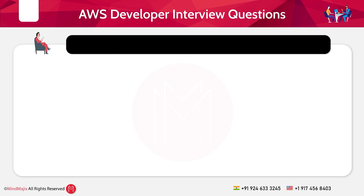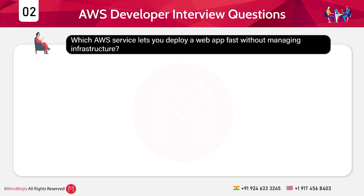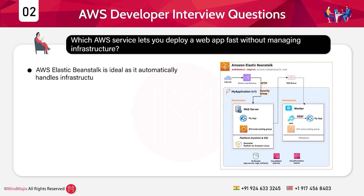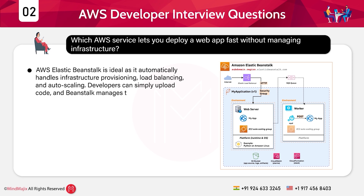Question 2: Which AWS service lets you deploy a web application fast without managing infrastructure? Answer: AWS Elastic Beanstalk is ideal, as it automatically handles infrastructure provisioning, load balancing, and auto scaling. Developers can simply upload code and Beanstalk manages the deployment stack. It supports multiple languages and platforms as well.